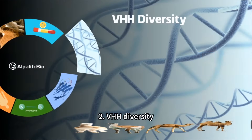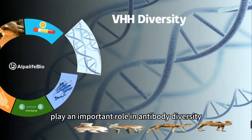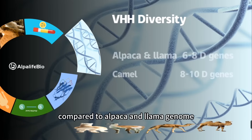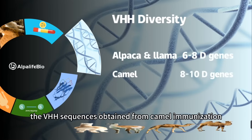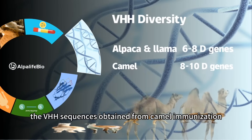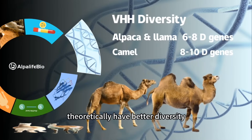2. VHH Diversity: The diversity genes, D-genes, play an important role in antibody diversity. Compared to alpaca and llama genomes, camels have more D-genes. As a result, the VHH sequences obtained from camel immunization theoretically have better diversity.